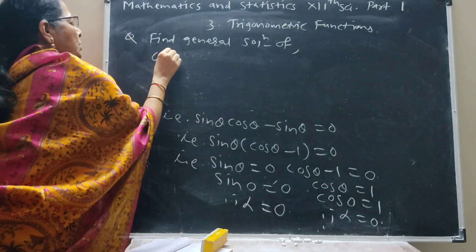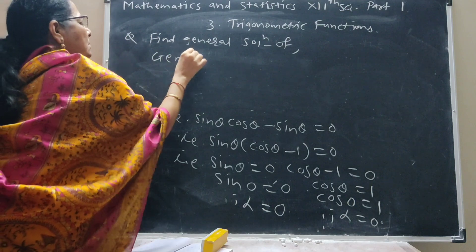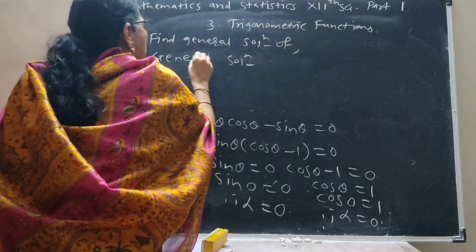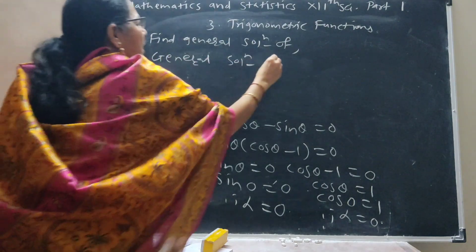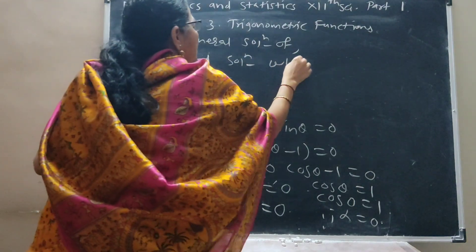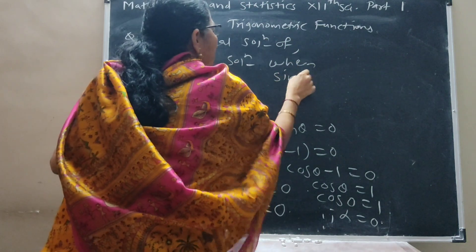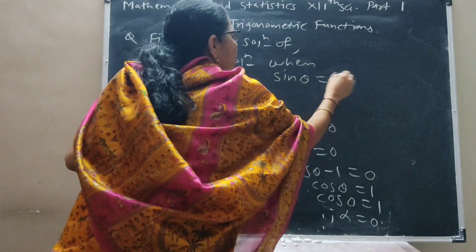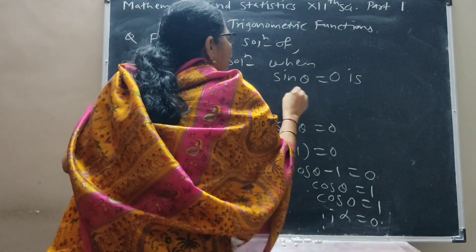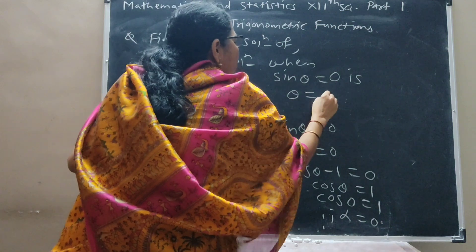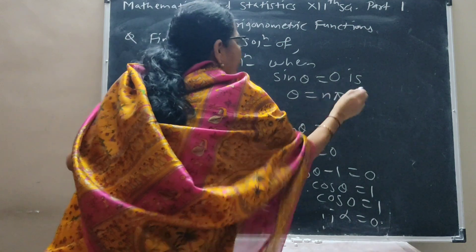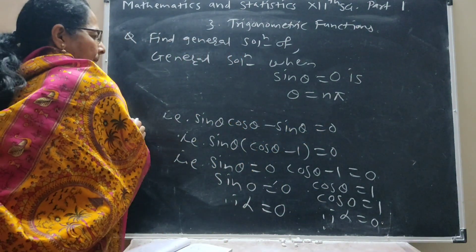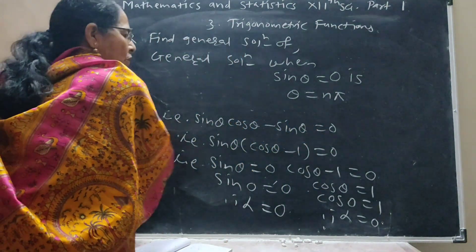General solution: when sine theta is equal to zero, the general solution is theta equal to n pi, where n belongs to Z.